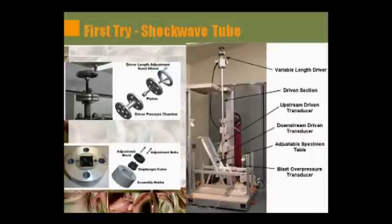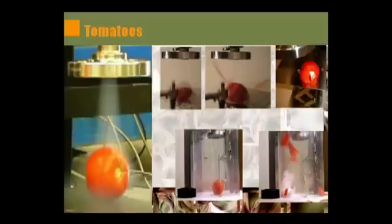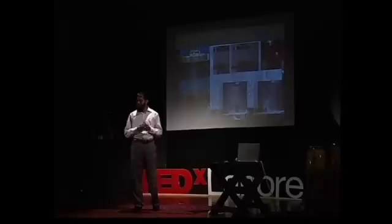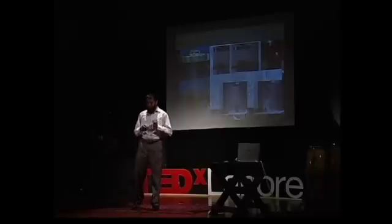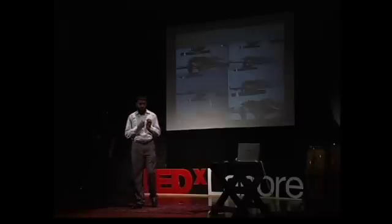To get it started, we started working on the shockwave tube. So we made this shockwave tube, and then we started for the proof of concept with poor tomatoes. We ruptured quite hundreds of these tomatoes, and then we moved to rats.